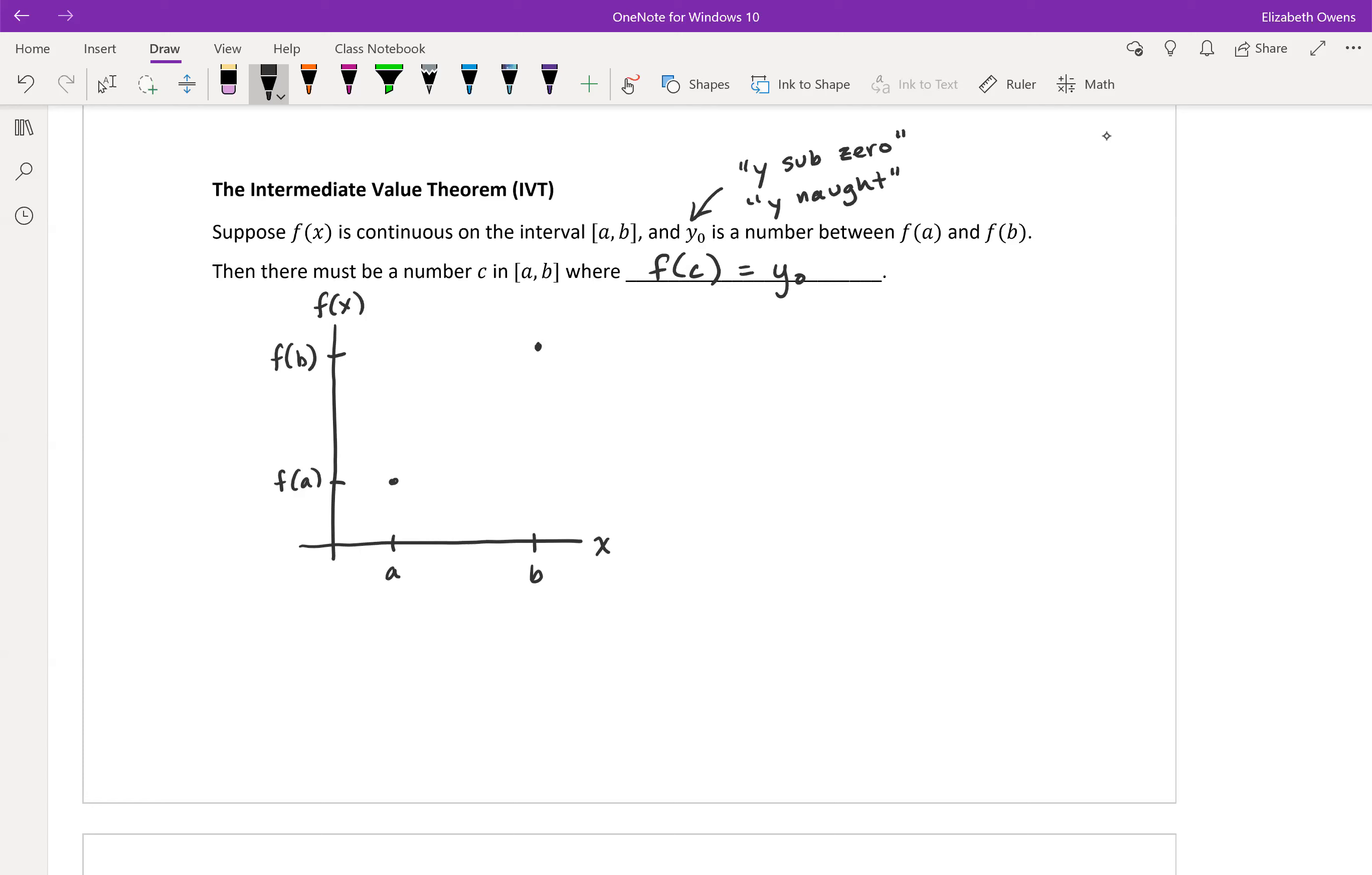And f(x) is continuous on that interval, so there are no weird holes in the graph, jumps, vertical asymptotes, nothing funky going on. So let's just make a nice smooth looking function there. There's f(x), it's continuous. And then we'll put in our y not value. So y not is a number between f(a) and f(b). We'll just pick some nice value in here. Let's say that's y not.